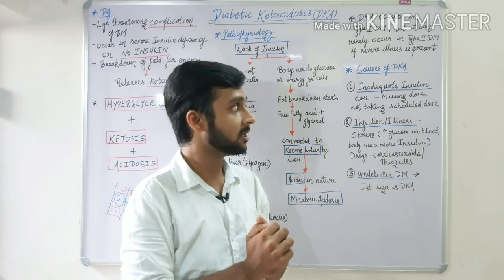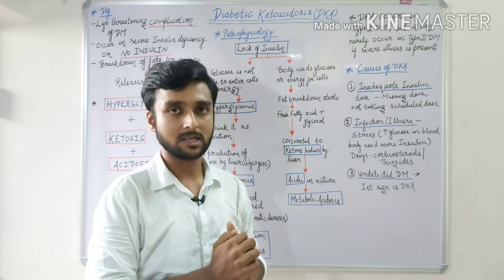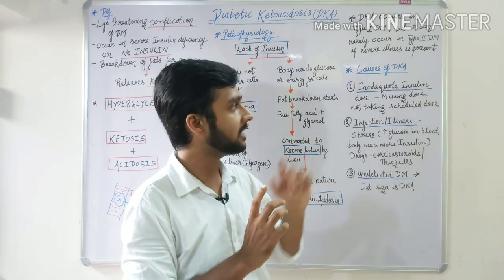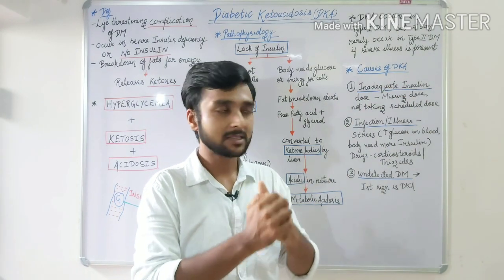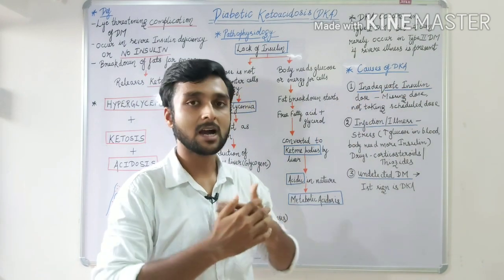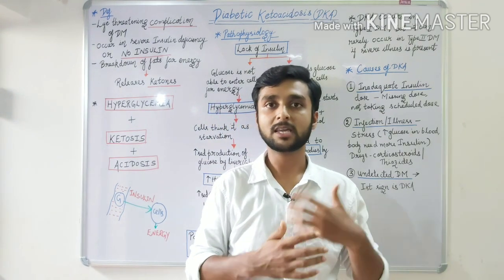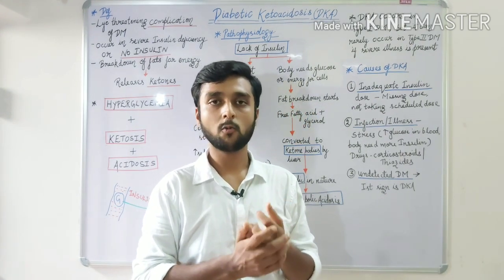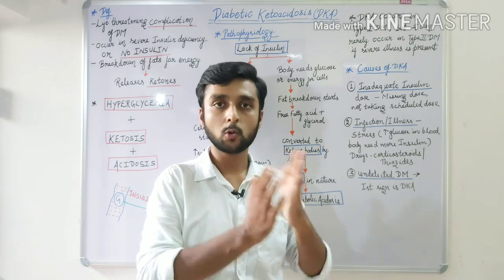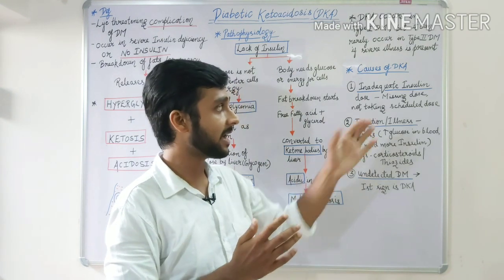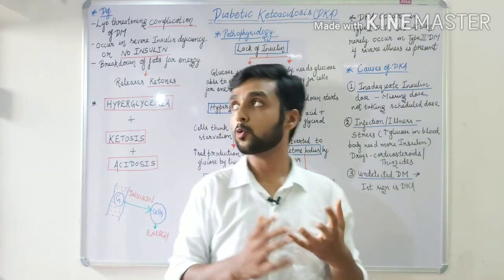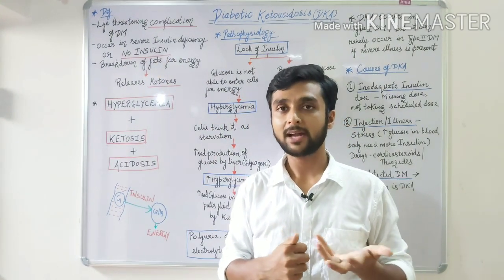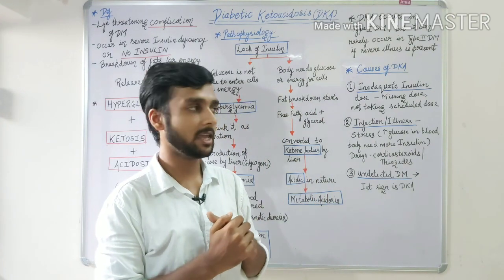Now the causes of DKA. We have written 3 causes here. The first is inadequate insulin dose — if a person is not taking insulin properly, for example a type 1 diabetes mellitus patient who is not taking insulin at the proper dose or proper time, or is missing doses, then a no-insulin condition can develop and the patient can go into DKA.